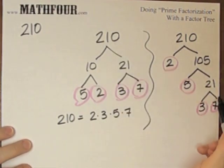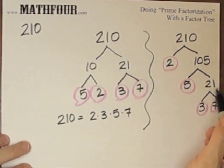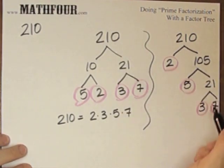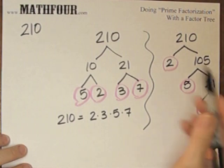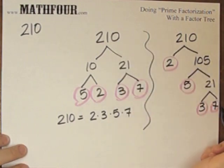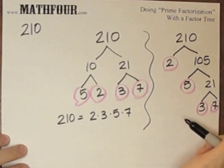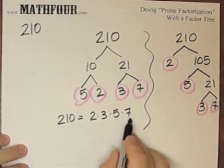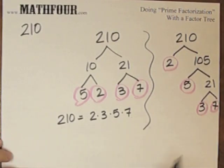There are a lot of different ways you can do these, and actually using permutations and combinations covered in a previous post, you can figure out how many different ways there are to do it, which might be a fun post in and of itself. So that's how you do prime factorization with the factor tree.